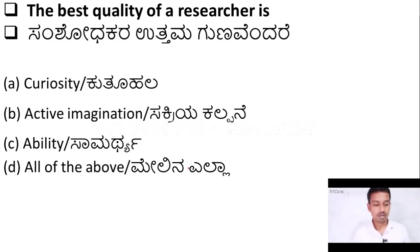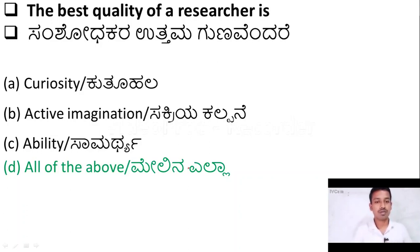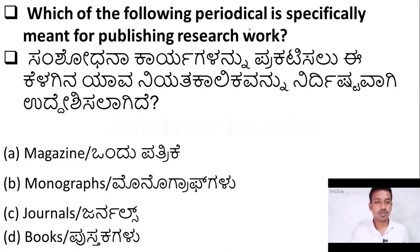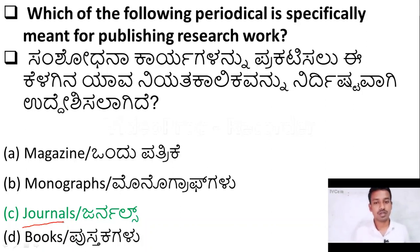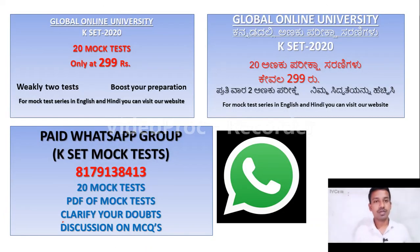Which of the following periodicals is specifically meant for publishing research work? Options: magazine, monographs, journals, books. The right answer is option C — journals. Journals are meant for publishing research work. Thank you very much.